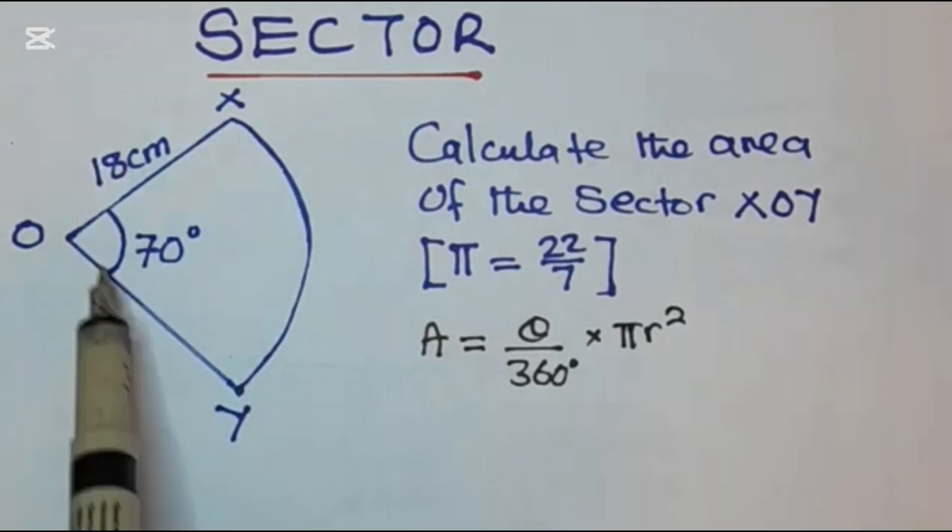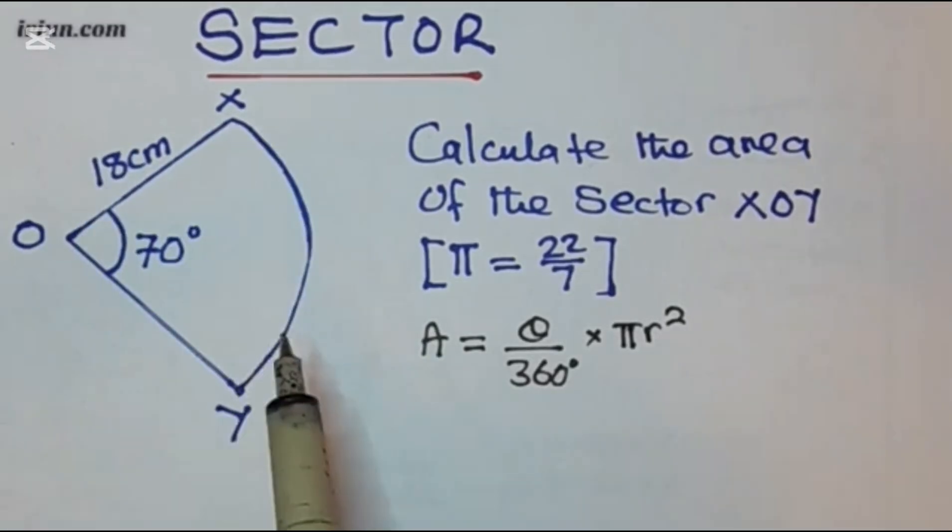A sector is just part of a full circle, so this is just a fraction of a full circle. That's the reason why we use this times the area of the full circle which is pi r squared. So we substitute.